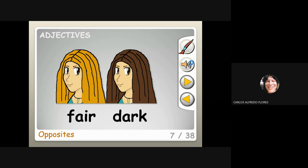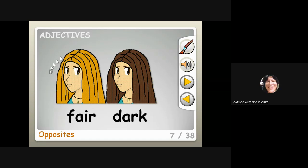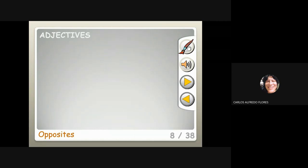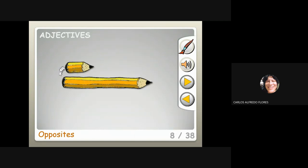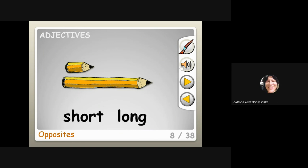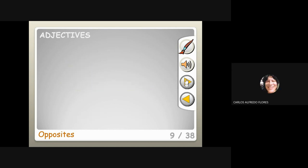She has fair hair and she has dark hair. Next, what are the differences? Long and short — the first is short, the second is long.